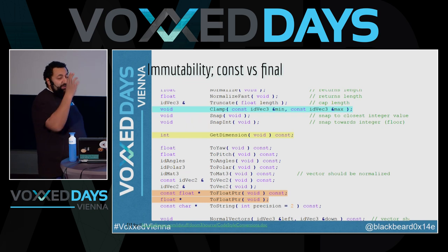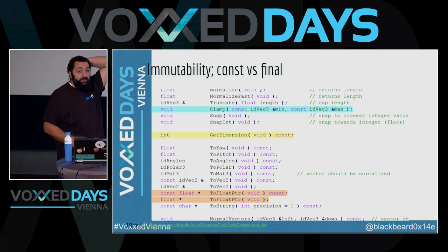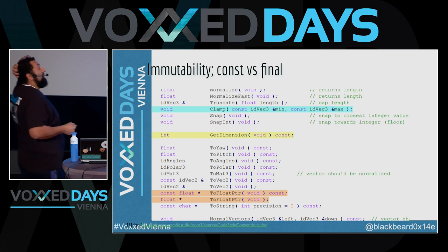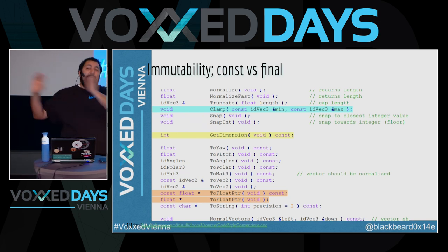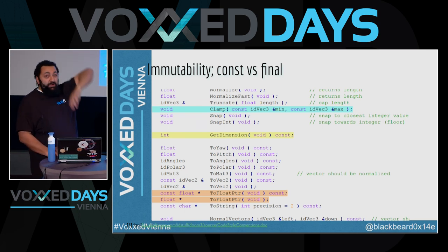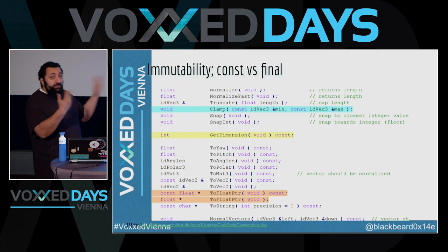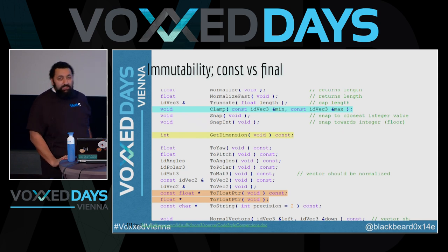Immutability. Java doesn't really have immutability the way C++ does. In C++ you have the const keyword — just put it in front of something and it becomes immutable, like magic. We don't have that. We have final. It doesn't do what you think it does — it just appears to do something. To be fair, final is supposed to do something else; it's not supposed to replace const. But if you look at older Stack Overflow posts or older literature, everybody says 'use final' as if it substitutes const. It absolutely does not.